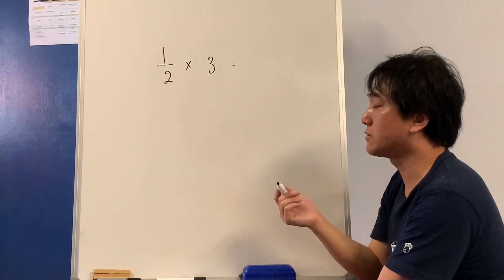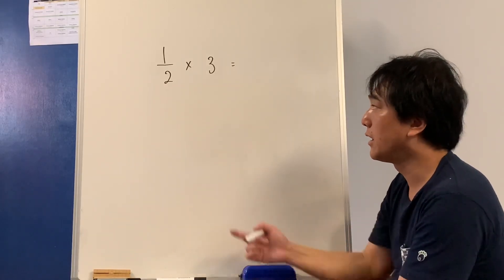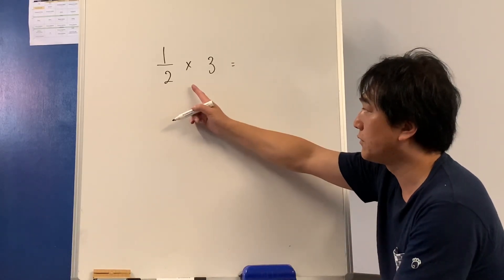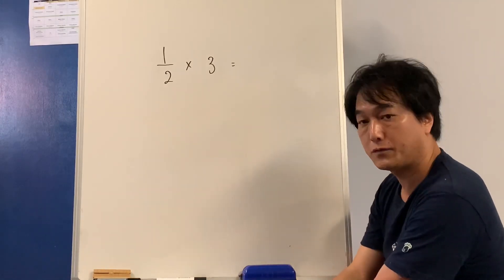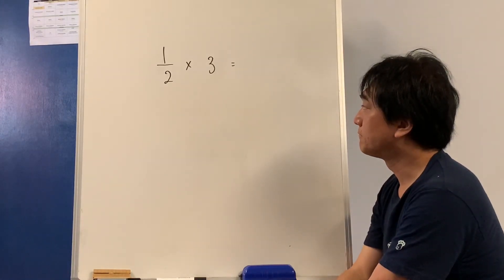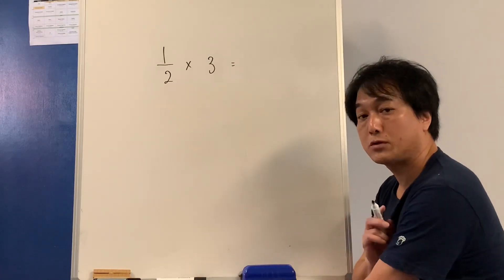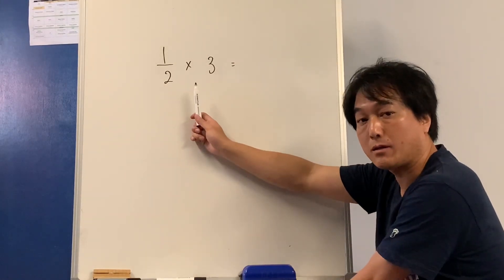Because multiplication is like 3 lots of something, 4 lots of something. But half a lot of something — hmm. Let's pause the video. What does this mean?